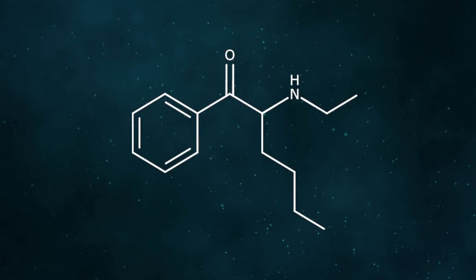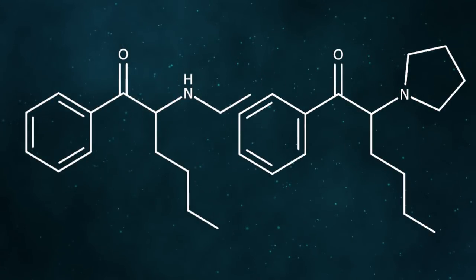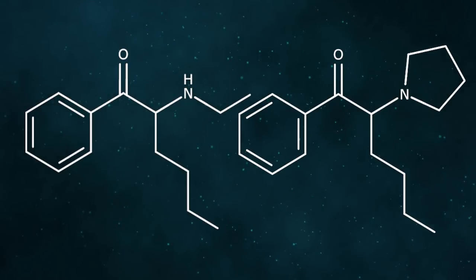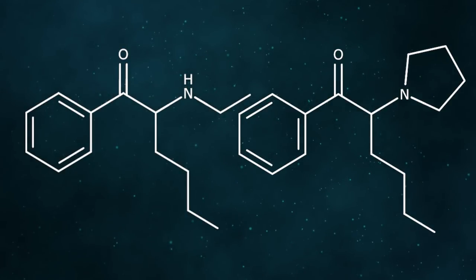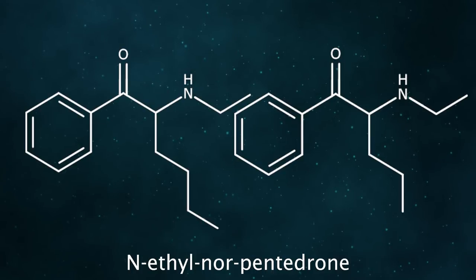HexN is the N-ethyl derivative of hexadrone. It has structural similarities to alpha-PHP, with the nitrogen in the pyrolidine ring of alpha-PHP instead being bonded to an ethyl moiety and a hydrogen in HexN. The drug is also similar in structure and homologous to N-ethyl pentadrone, another research chemical stimulant.